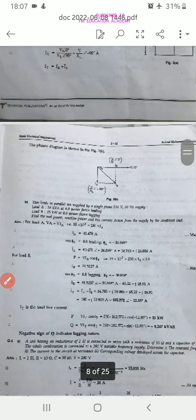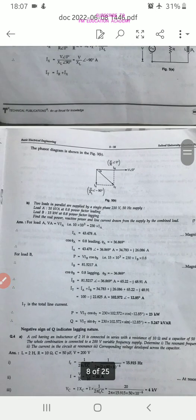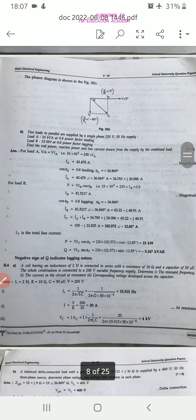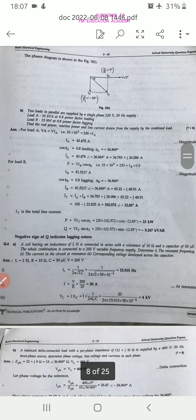You should know the formulas for the real power, reactive power and current. This is also from the starting units. Then, fourth question. A bit is, a coil having inductance of 2 Henrys connected in series with a resistance of 10 Ohm and a capacity of